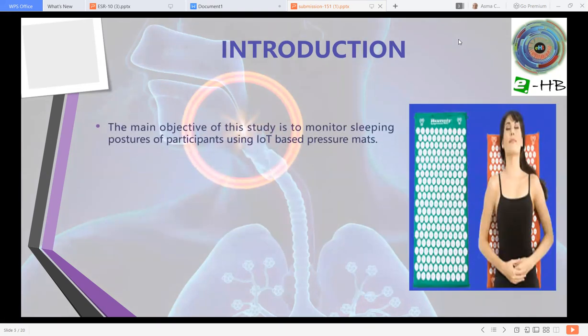So the main objective of this study is to monitor sleeping postures of participants using IoT-based pressure metrics. PressureMate is designed with a total of 2048 pressure sensor points with a scan rate of 372 sensors per second.